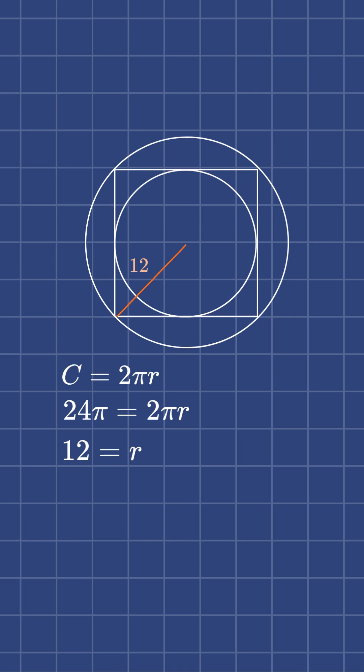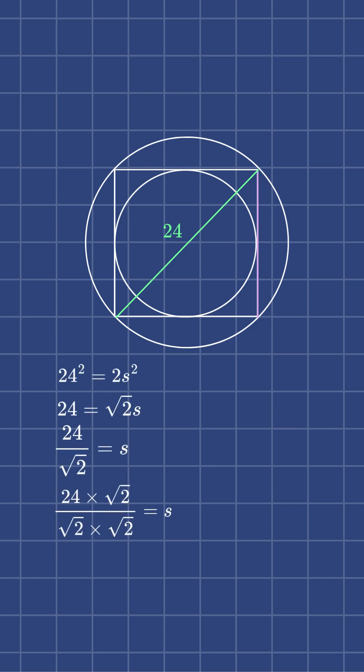And the diameter of the outer circle equals the diagonal of the square, so the diagonal of the square is 24 meters. And to find the side length of the square, we'll use the Pythagorean theorem. This gets us that the side length of the square is 12√2 meters.